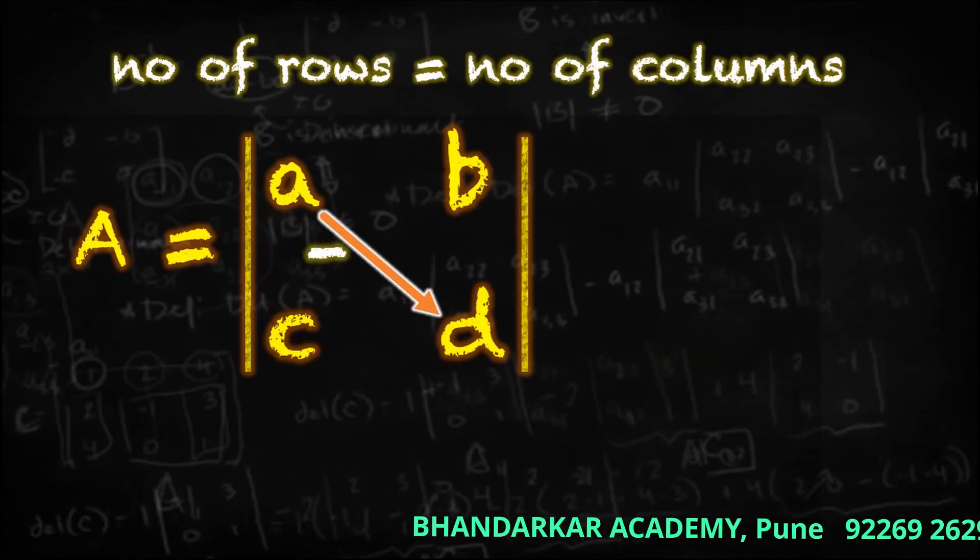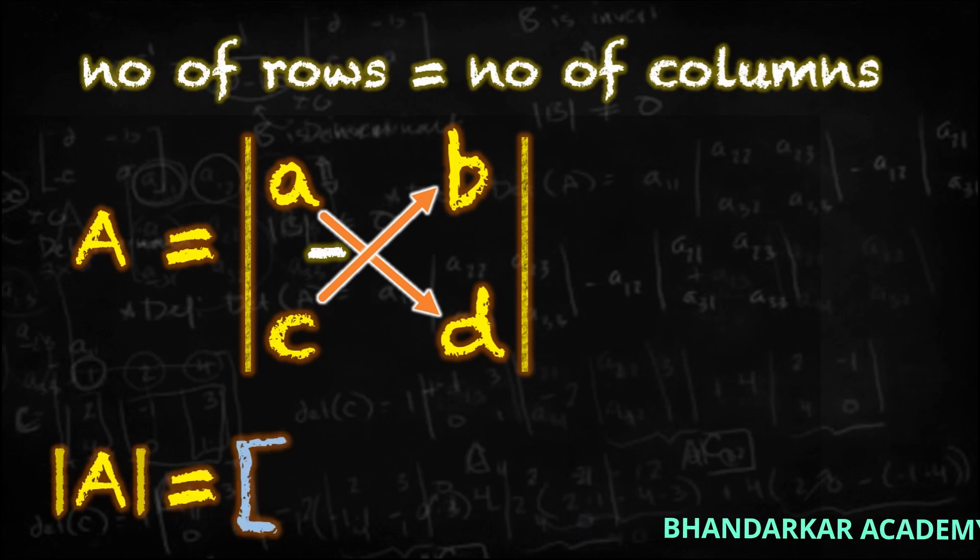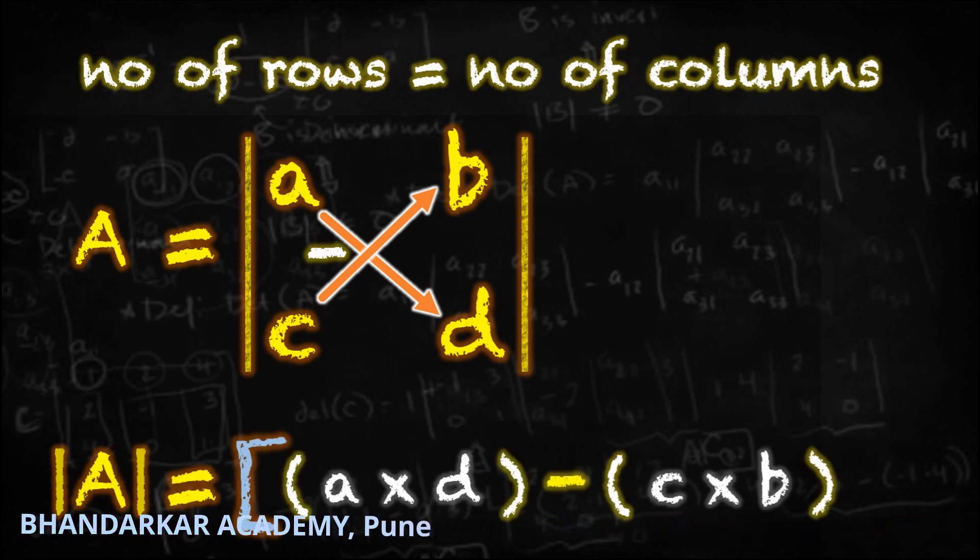Yaha se yaha minus yaha se yaha. Bada bracket, chota bracket: A into D minus C into B. Bada bracket complete.